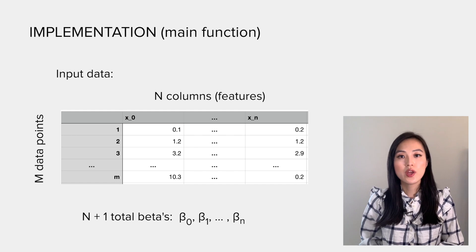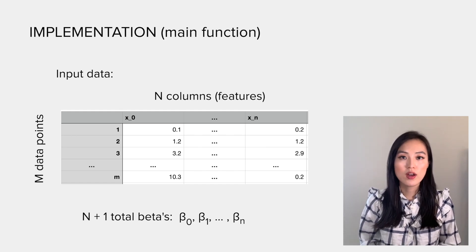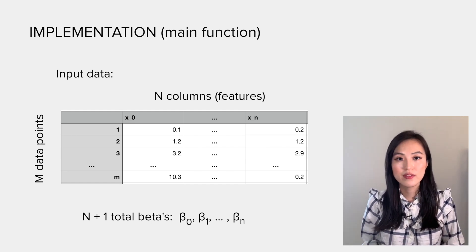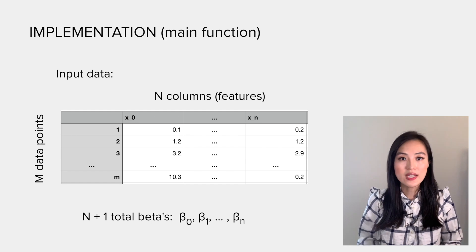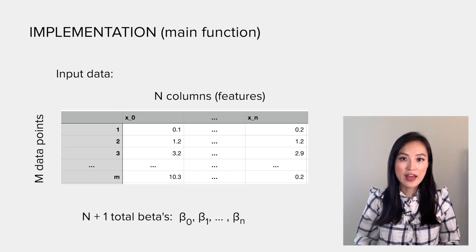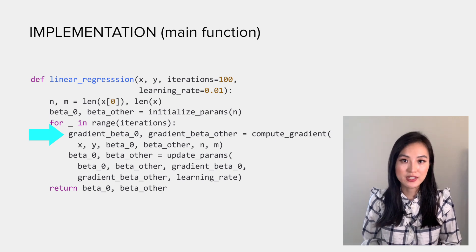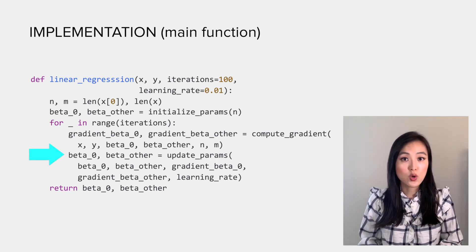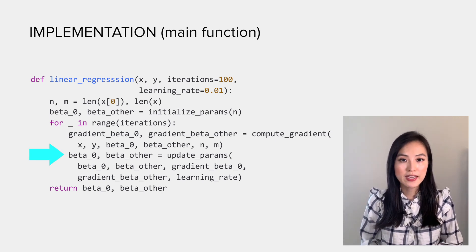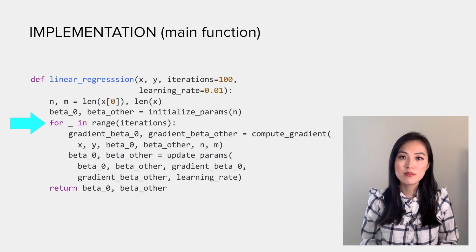We have m data points in total, and each one has n columns. Each column represents an independent variable, so there are n plus one betas, from beta_0 to beta_n. All betas are one-dimensional; we can say each of them is a scalar. Secondly, we compute the gradient of betas, then we use the gradient to update the values of each beta. We repeat this process multiple times.